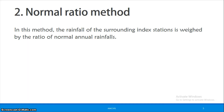The next method is the normal ratio method. In the arithmetic mean method, we cannot consider any weightage — we simply average the station values. The normal ratio method is used when there is more than a 10% variation in normal annual rainfall between the missing station and the index stations.